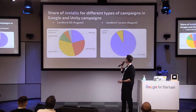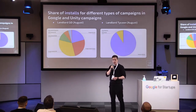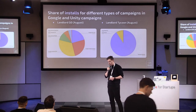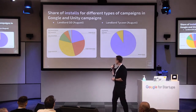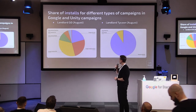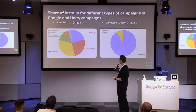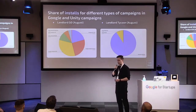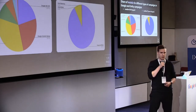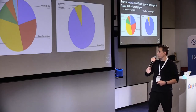Here is the share of installs for different types of campaigns in Google and Unity campaigns. This data is from August. We can see that most of our installs on iOS are from Google — those are CPI campaigns. There are also ROAS campaigns from Unity on iOS, but still we are doing much more iOS campaigns on Google.